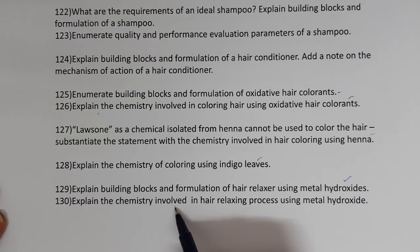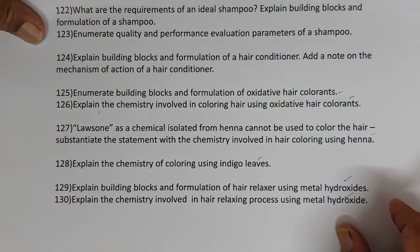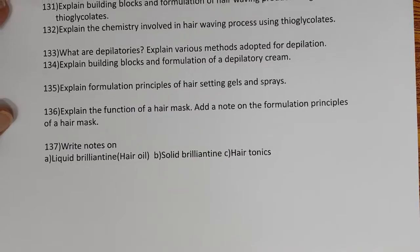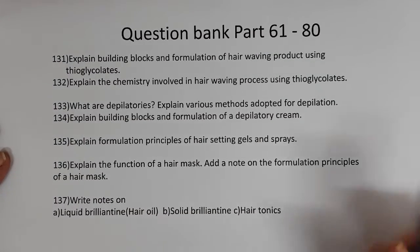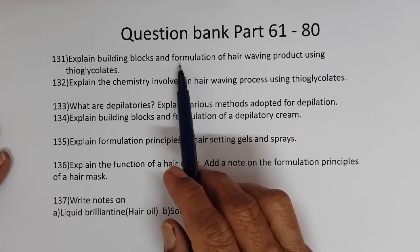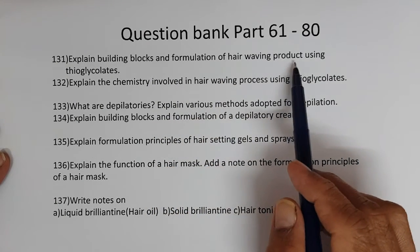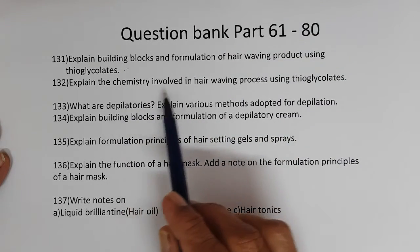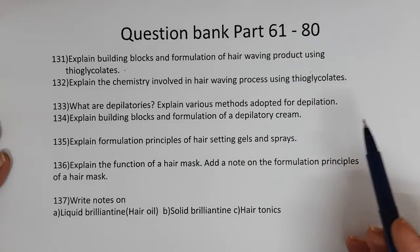Explain the chemistry involved in the hair relaxing process using metal hydroxides. Explain building blocks and formulation of a hair waving product using thioglycolates. Explain the chemistry involved in the hair waving process using thioglycolates.